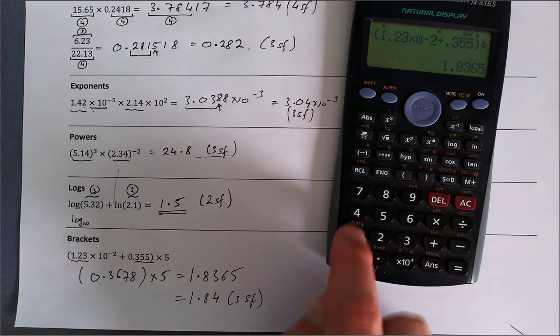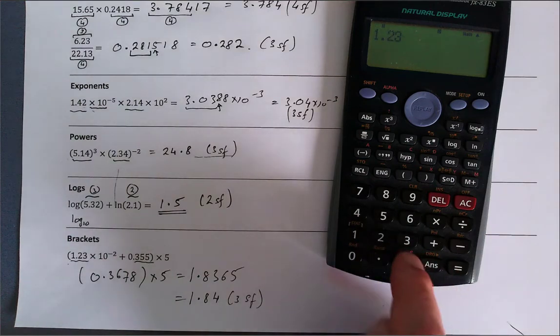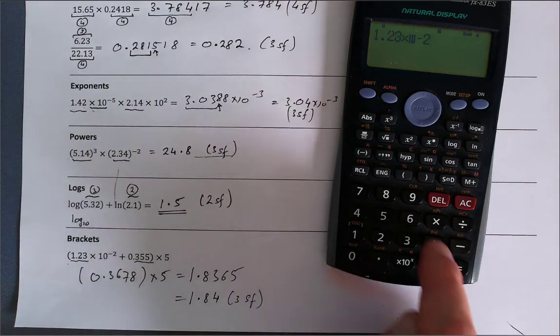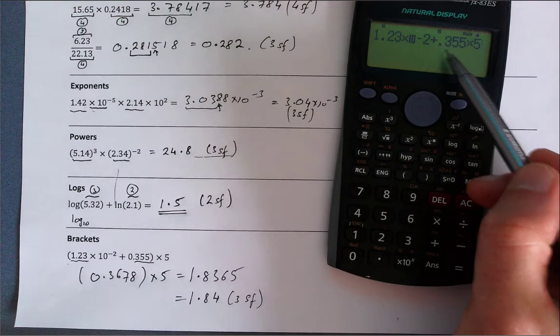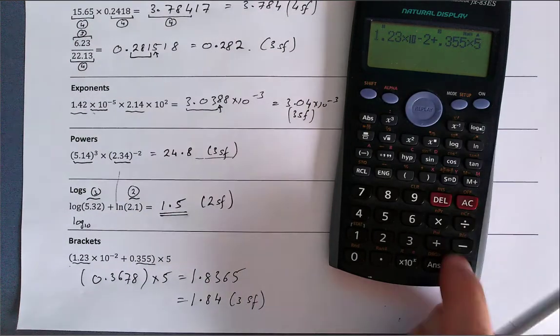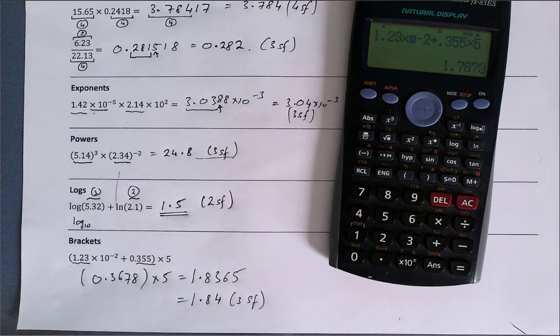You can see if I didn't put the bracket in, 1.23 times 10 to the minus two plus 0.355 times five, the calculator would do this last bit first before adding on, and you can see we get a totally different number. So following the rules of the brackets is important.